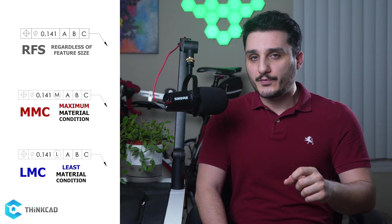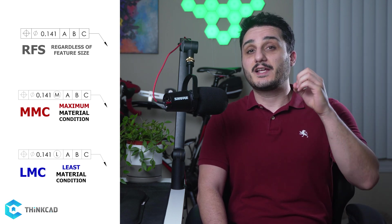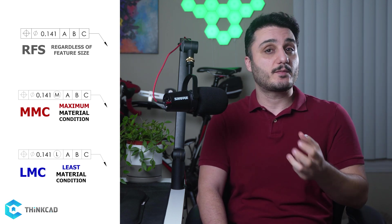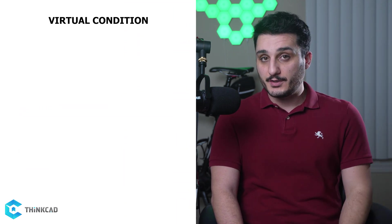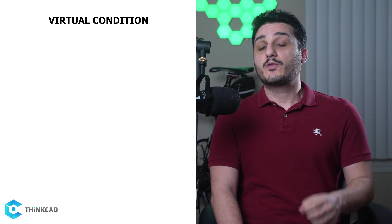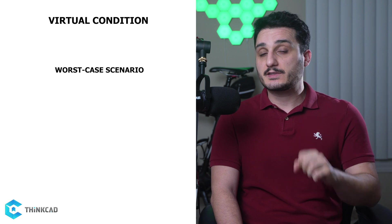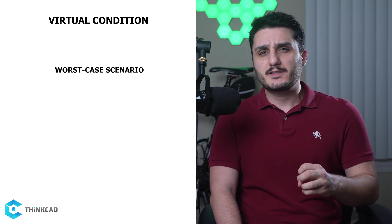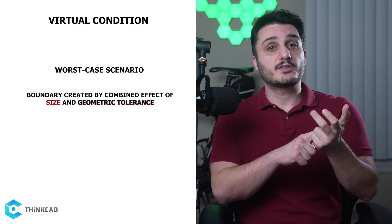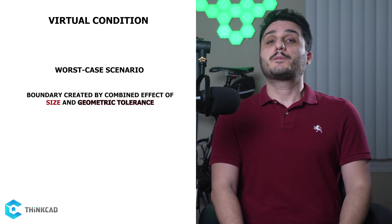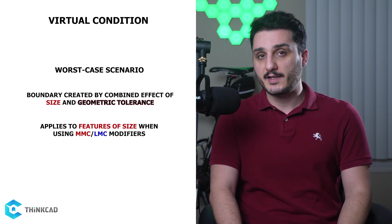So far you have learned what RFS, MMC and LMC conditions are. This is the next step in understanding the benefits of MMC and LMC modifiers. Virtual condition is the condition of worst case scenario. It is basically a boundary that the combined effect of your size and geometric tolerance creates. It applies on features of size when we use MMC or LMC modifiers in our GD&T callout.